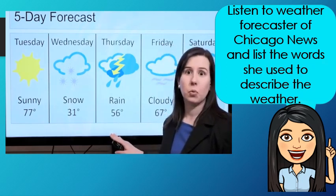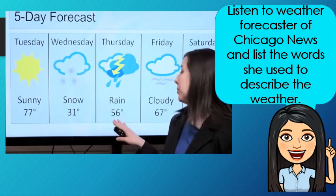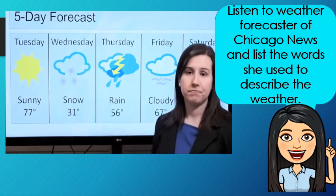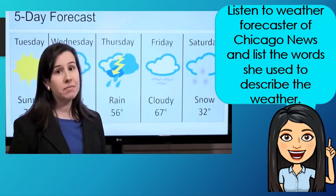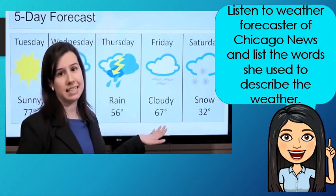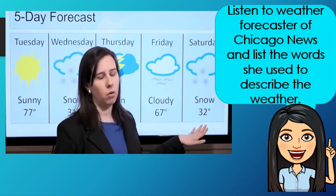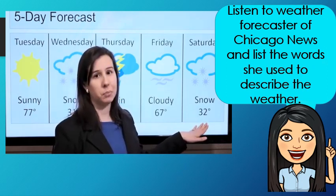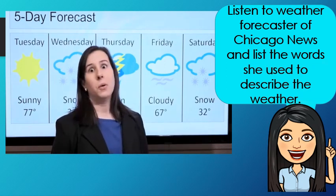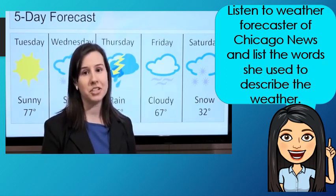On Thursday, there will be a big storm. Be careful — it will rain a lot and it will be very windy. The temperature will be about 56 degrees. On Friday, it will be a little windy and a little cloudy. The temperature will be 67 degrees. And on Saturday, it will snow again. The temperature will be 32 degrees. Welcome to the crazy weather in Chicago. Again, I'm Maria from Chicago News. Thanks for watching and have a good week.